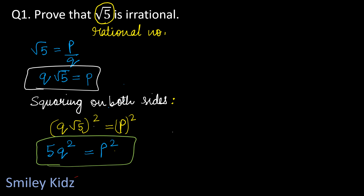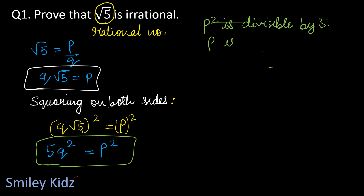From 5q² equals p², we can write that p² is divisible by 5. When p² is divisible by 5, then p will also be divisible by 5. So p is divisible by 5. Now let p equal 5m.